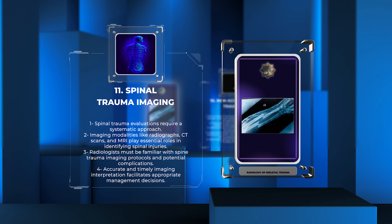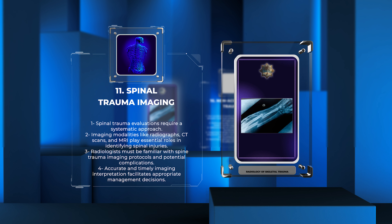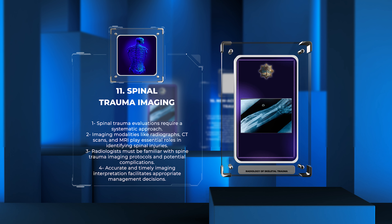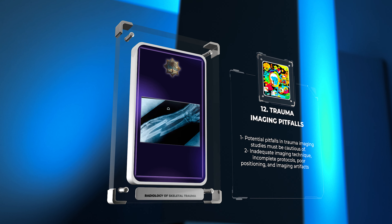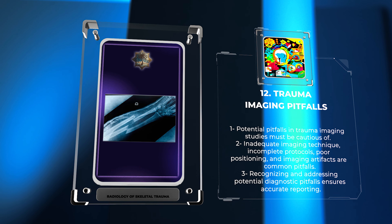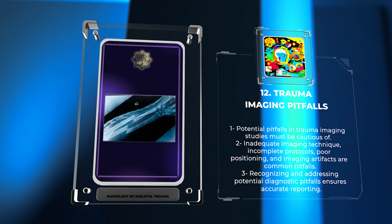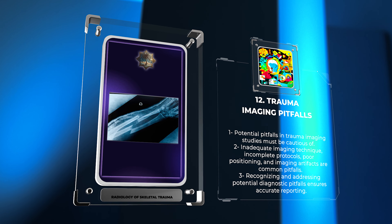The evaluation of polytrauma patients involves a systematic approach to identify and prioritize injuries. Radiologists play a critical role by performing comprehensive imaging studies to assess for fractures, dislocations, and other traumatic injuries. Advanced imaging techniques such as CT or MRI are often required to fully evaluate the extent of injuries. Polytrauma encompasses multiple injuries from high-energy mechanisms involving different body systems. Whole-body CT scans in the trauma bay help identify fractures, organ and vascular injuries, and spinal cord damage. Prompt and accurate interpretation of these scans is vital for appropriate interventions and reducing complications.